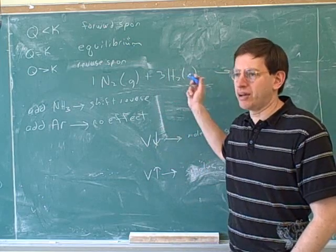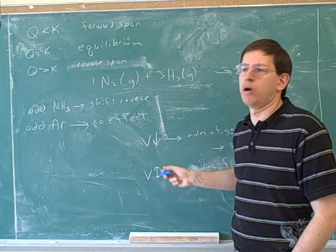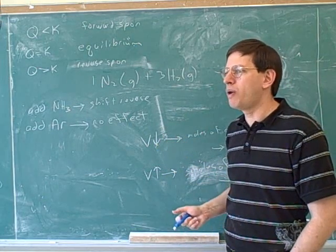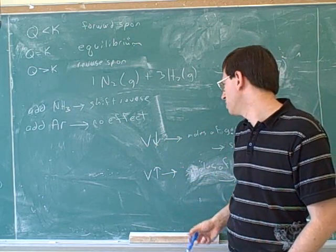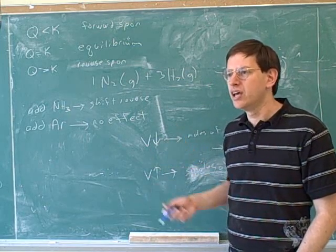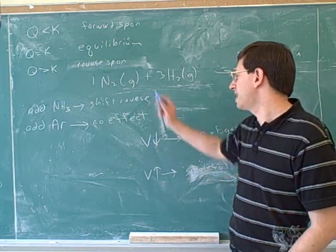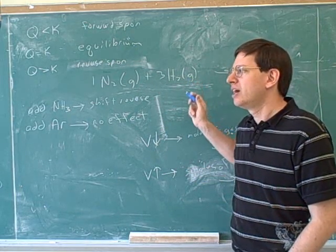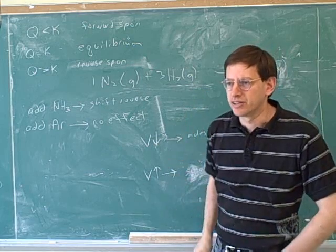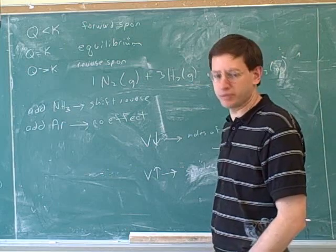What if there were equal amounts of moles of gas on both sides? Well, then when you change the volume, nature won't respond. Because there's no way to change... If you increase the crowding, nature has no way to decrease the crowding in that case. So if you decrease the volume and there's the same number of moles of gas on both sides, the reaction won't shift. And it'll just stay where it is. So those are all cases that can come up.